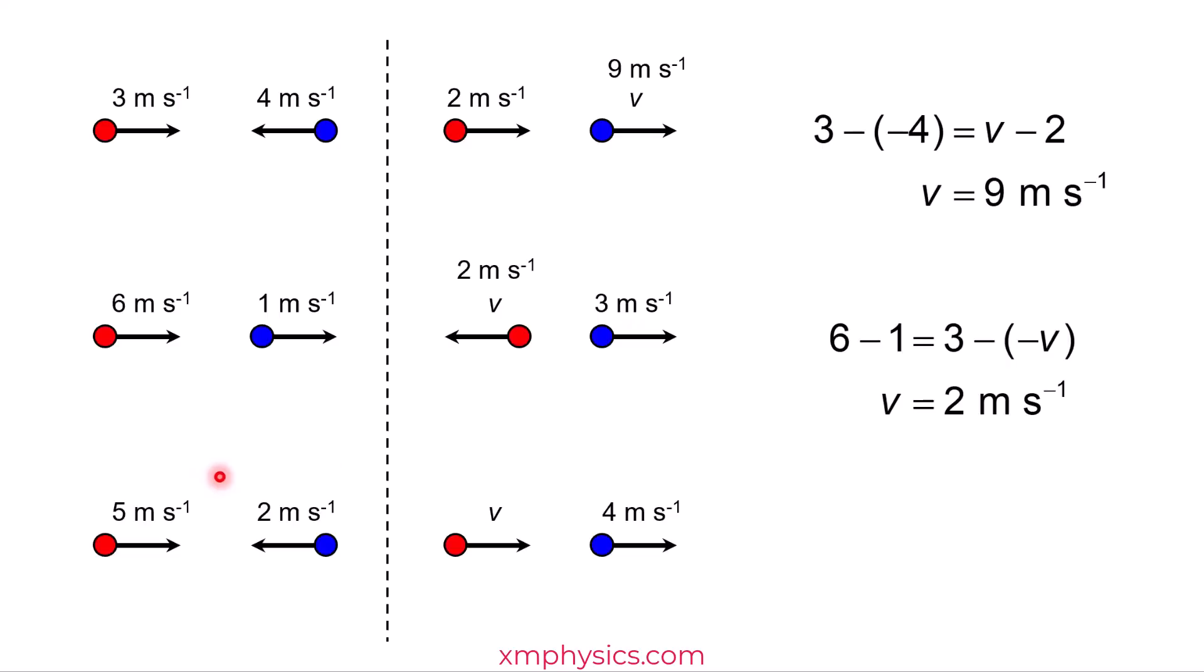Let's do one last one. So again, this minus that is that minus this. So 5 minus negative 2 should be equal to 4 minus V. So you do the math. Turns out V is negative 3 meters per second.